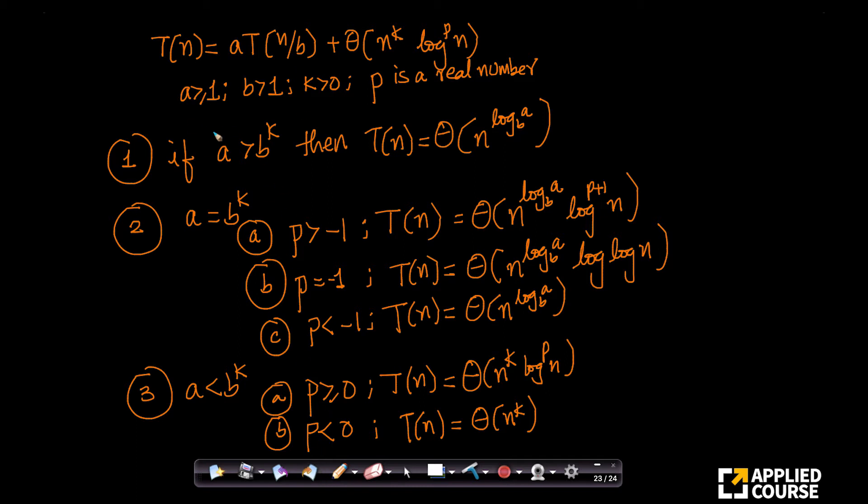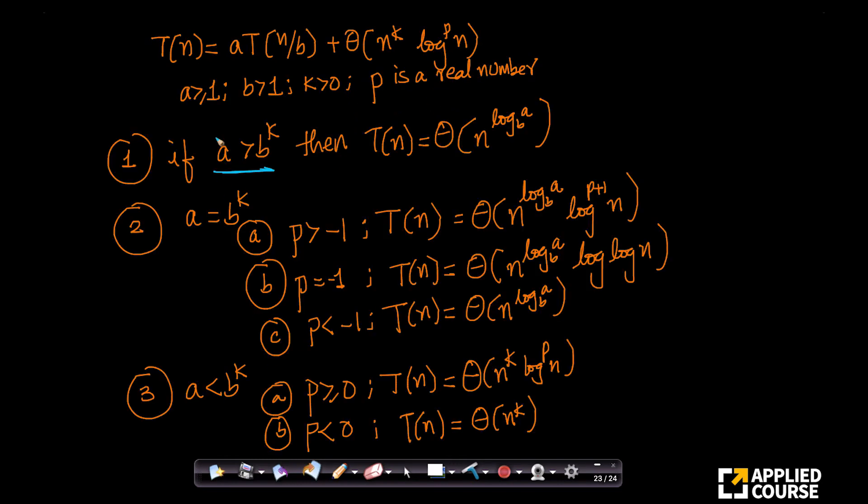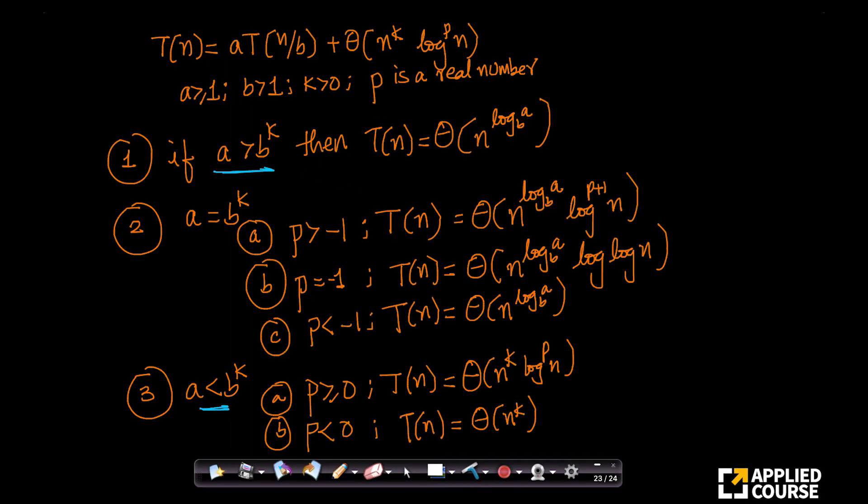Now let us look it up. What is the first comparison that we have to make? A and b power k. What is A? A is 1. What is b power k? b power k is 3. Now what do we have? A to be less than b power k. This is the case that we are in. A is less than b power k. Which means we are in this case.